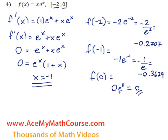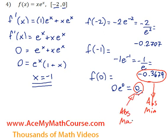So this is the lowest value, and that's the highest value. So there's an absolute minimum at x equals negative 1, and an absolute maximum at x equals zero. That's it.